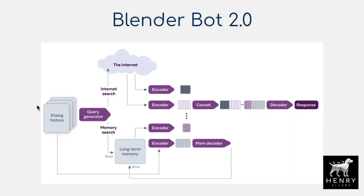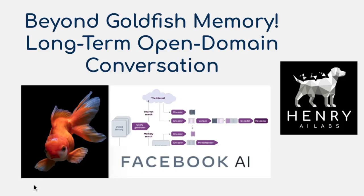As a recap, this is half of the new changes in BlenderBot 2.0 from Facebook AI — the idea of taking the dialogue history, doing a memory search to return something from memory and add it to the current context for the decoder's response, while also having a model that updates long-term memory with the dialogue history. This raises interesting questions about the role of abstractive summarization in document query lookups for large document indexes, and the data differences between multi-session chat datasets and web scrapes for language modeling.